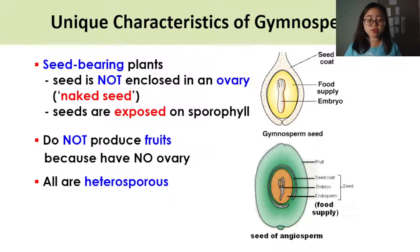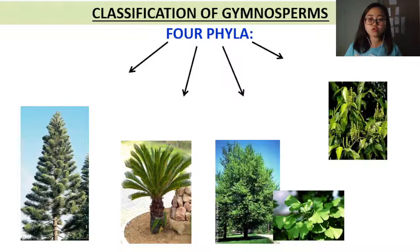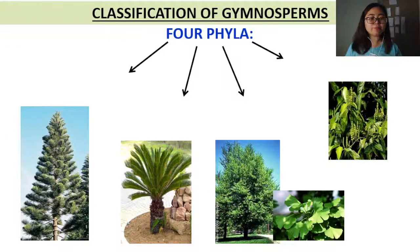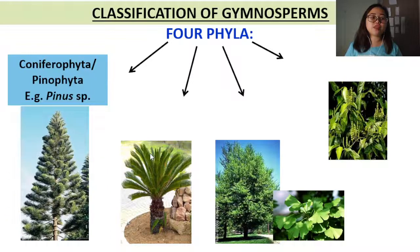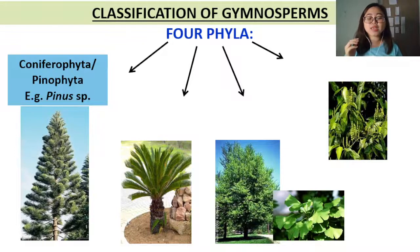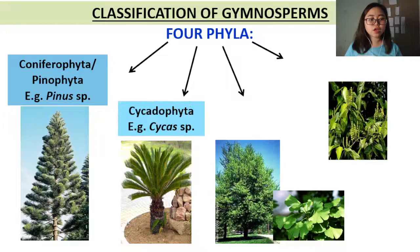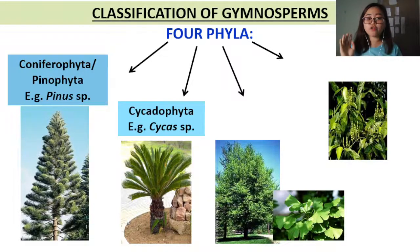After looking at the unique characteristics of gymnosperms, we'll talk about the classification of gymnosperms into four phyla. As you can see from the images, they can look quite different from each other. The most familiar phylum is the first one: phylum Coniferophyta, also called Pinophyta — both names are correct. The usual example used for this phylum is Pinus species. For phylum Cycadophyta, it is usually mistaken for palms but is different. A common example used for Cycadophyta is the Cycas species.